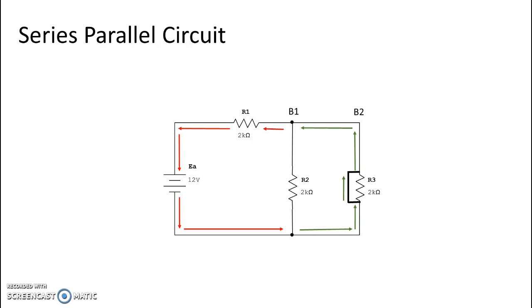Again, we have a series-parallel that has turned into a series circuit with only one path for current. Looking at resistance, we know that resistance was 3k, and that's going to change. Our resistance is now 2k, which is the resistive value of R1. Because we shorted around R3, R3 has no ohmic value, so the entire ohmic value is only the resistance of R1, which is 2k ohms.